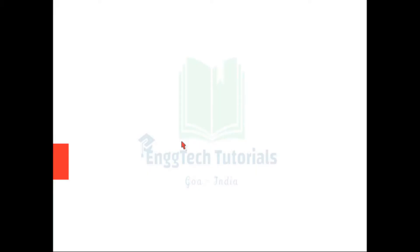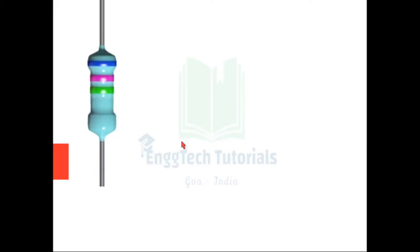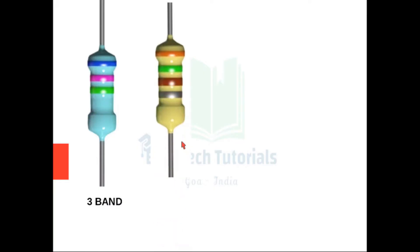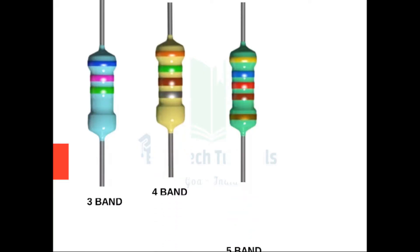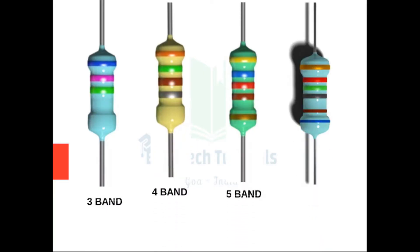Basically, there are four different color coding band resistors — a 3 band resistor, 4 band resistor, 5 band resistor, and a 6 band resistor, depending on how many color bands are present on the resistor.